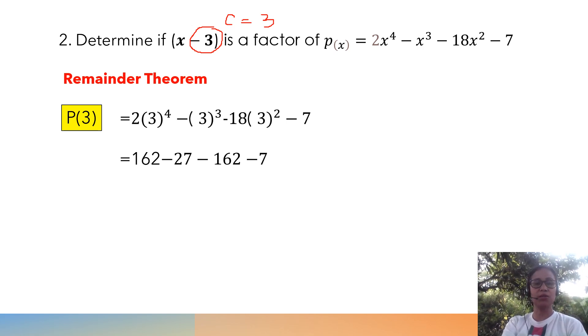162 - 27 - 162 - 7. Combining all these integers, we will get negative 34. Therefore, P(3) has a value of negative 34, or our remainder is negative 34.